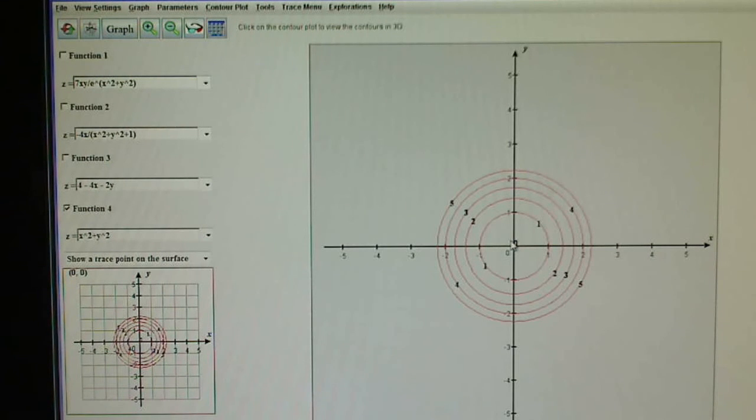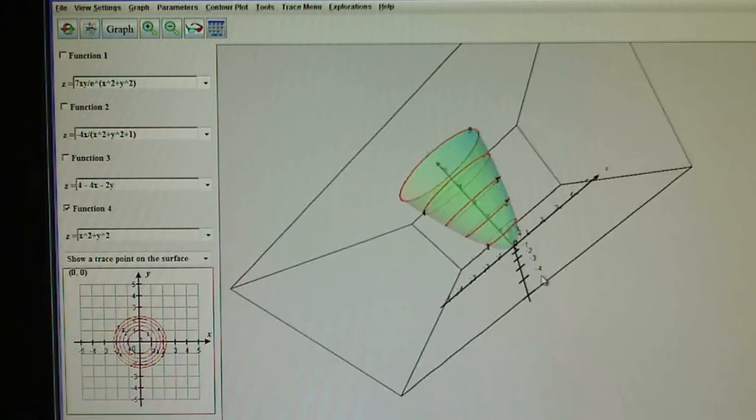You can see how the contours are getting closer together. That means something specific that we'll learn in class. What's really nice to help with your visualization, this says click on the contour plot to view the contours in 3D. They mean click on this window. Watch what happens. This is pretty spectacular.